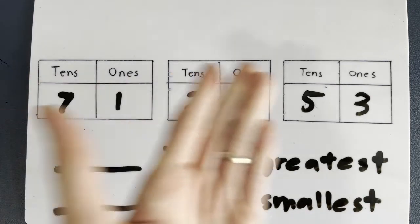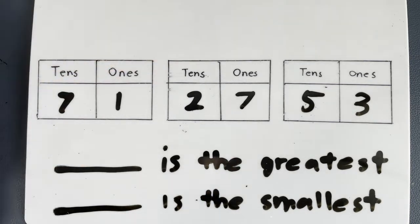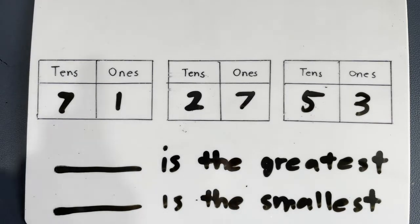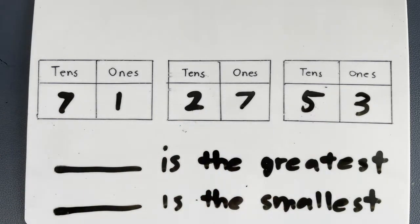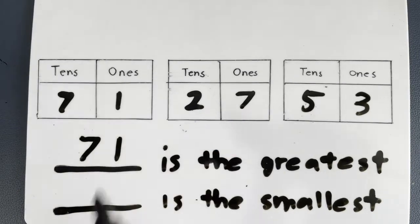When we look at these three numbers, how do we tell which is the greatest? We look at the tens, because the one with the biggest tens will be the biggest number. So tell me, is 7, 2, or 5 the greatest? Hopefully your answer is 7, because 7 is the greatest. So 71 will be the greatest number.